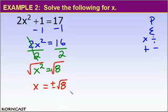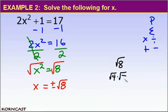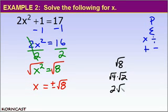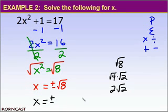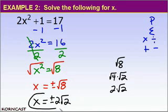We can simplify the square root of 8. The square root of 8 is really the square root of 4 times the square root of 2. The square root of 4 is 2, so we get 2 times the square root of 2. My final answer is x equals plus or minus 2 root 2.